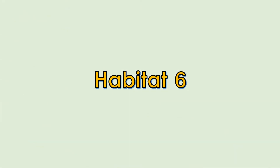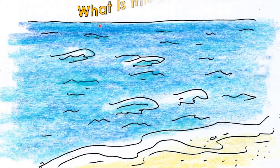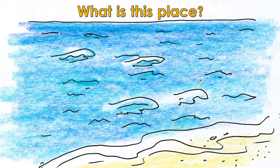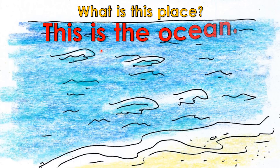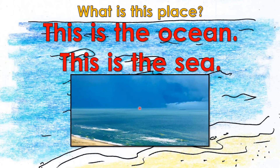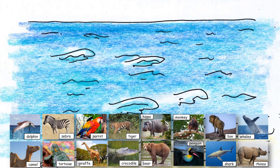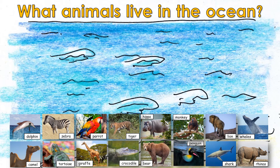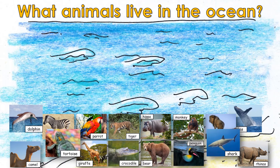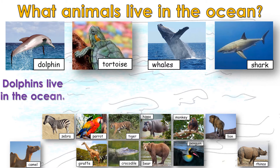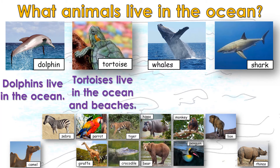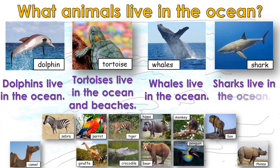Habitat 6. What is this place? This is the ocean, also called the sea. The ocean is water. What animals live in the ocean? Dolphins live in the ocean. Tortoises live in the ocean and beaches. Whales live in the ocean. Sharks live in the ocean.